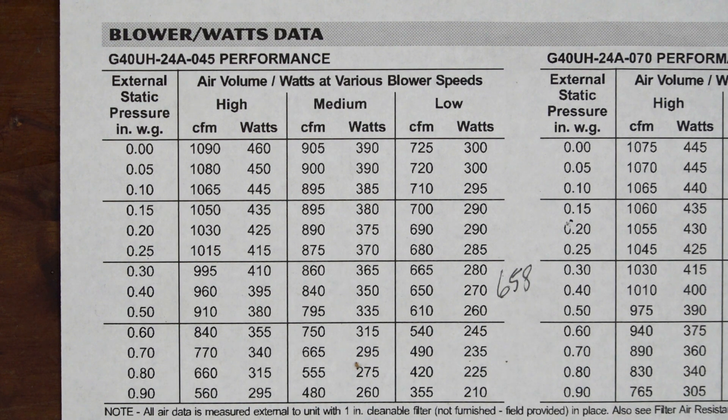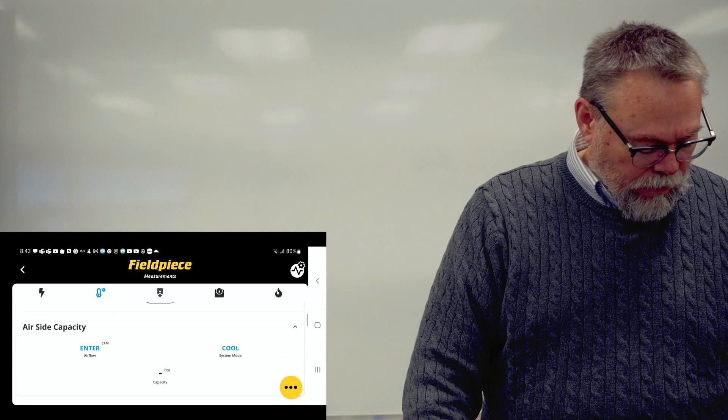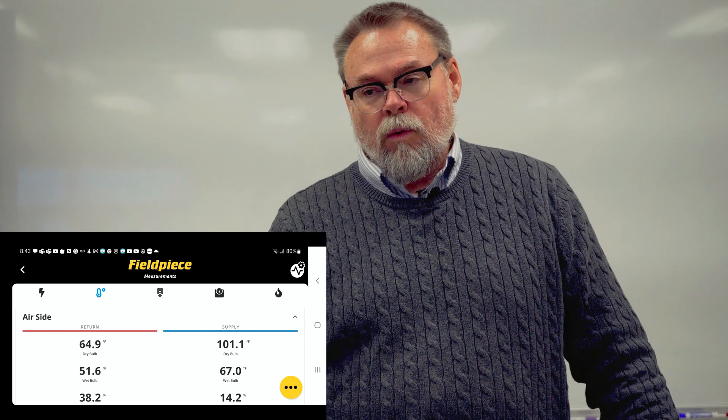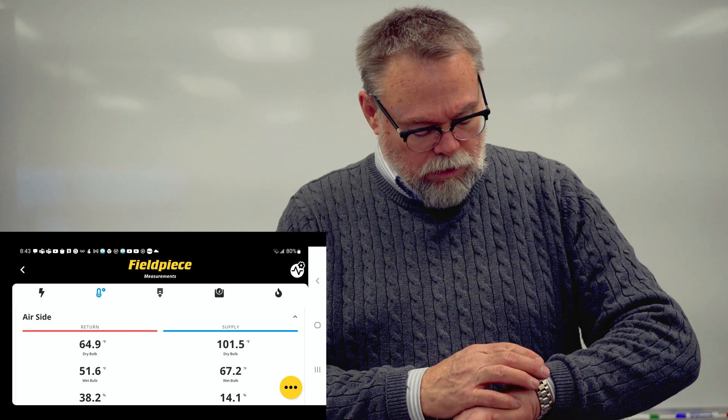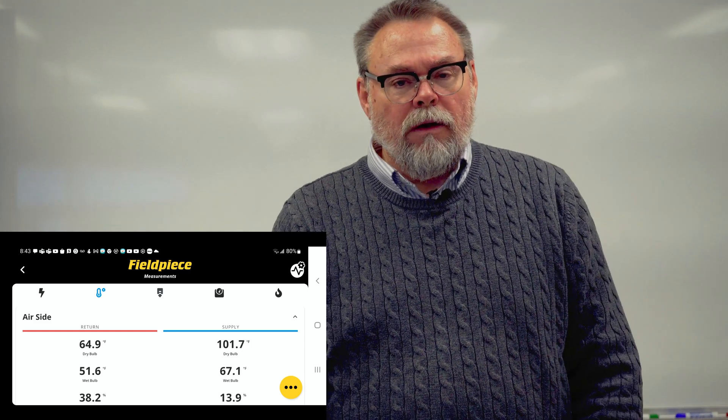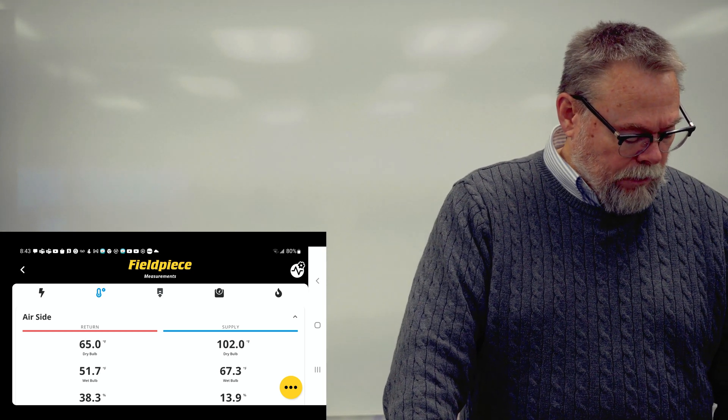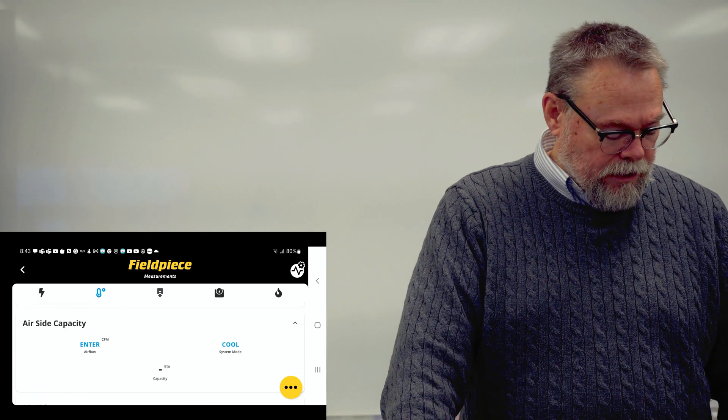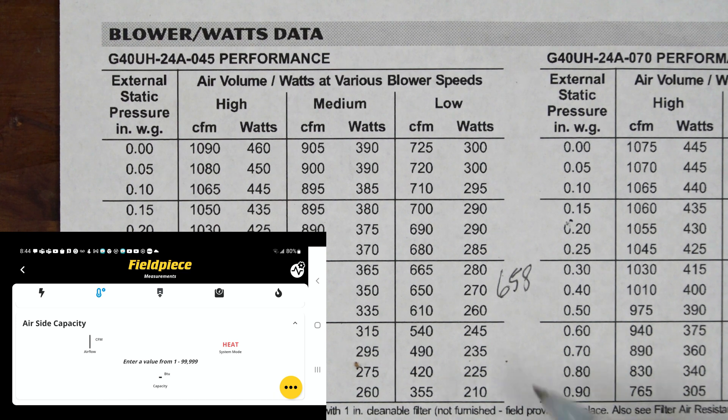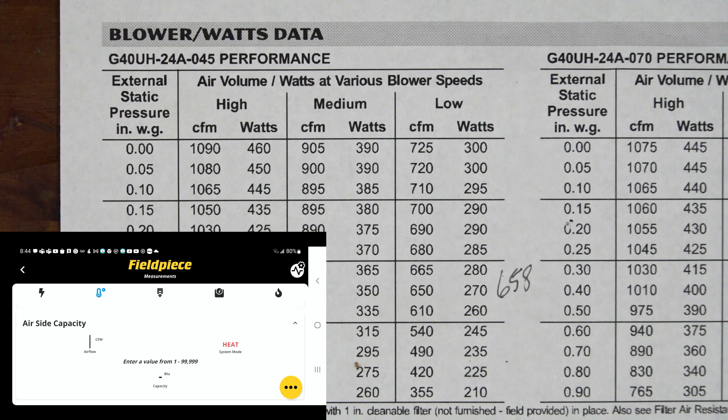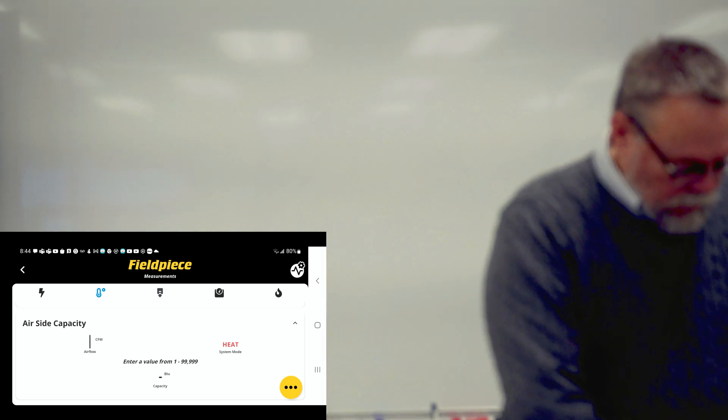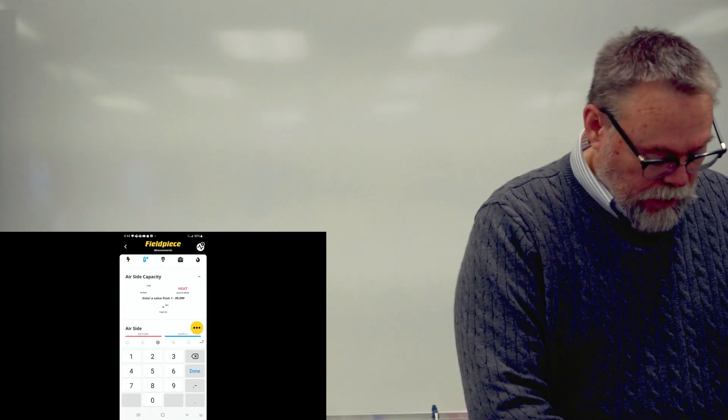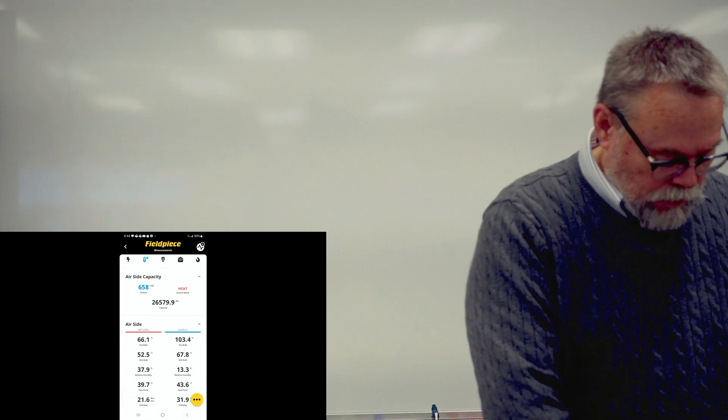Now I've already got my field piece probes in. As you can see, our return air temperature is at 65 and our supply air temperature is already at 101 and it's rising. This unit has been running, we'll run it for about 10 minutes. It's been running about a minute right now. Because I have this in cool mode on my JobLink app, I'm going to switch it over to heat. Now that it's in heat, I'm going to enter the CFM and we decided we were going to use 658. So 658, just put that in there.